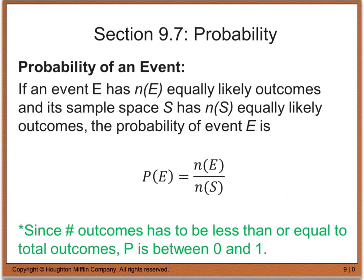The formal definition for probability of an event says: if an event, which we are going to call E, has N equally likely outcomes, and its sample space has N of S equally likely outcomes, then the probability of the event is given by the number of outcomes divided by the total number of outcomes.